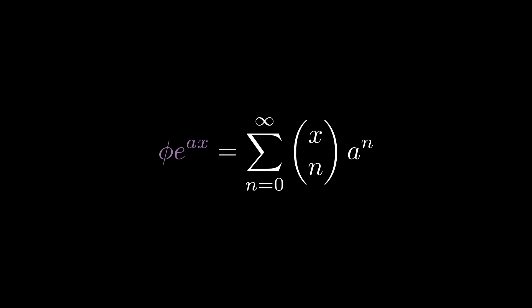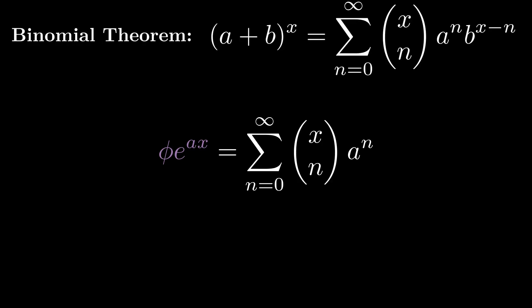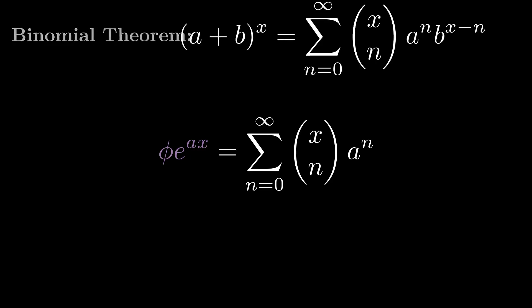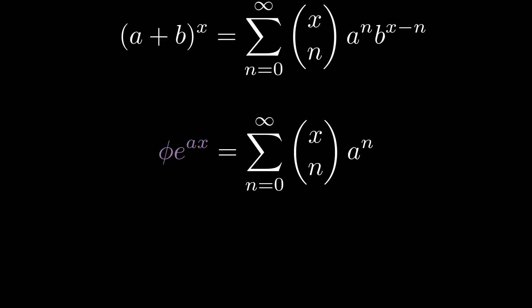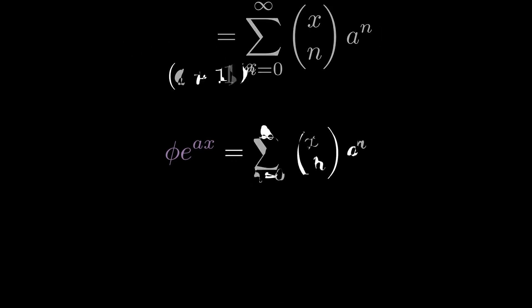This might look familiar already. Recall the binomial theorem: it states that a plus b to the x equals the sum from 0 to infinity of x choose n times a to the n b to the x minus n. When b is 1, well, that's exactly what we're looking for. So there we go, the phi of e to the ax is a plus 1 to the x.